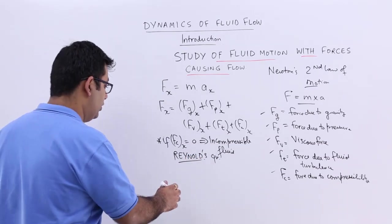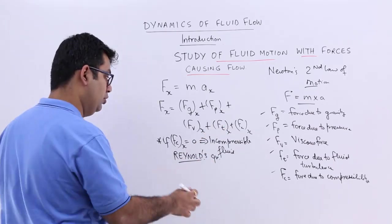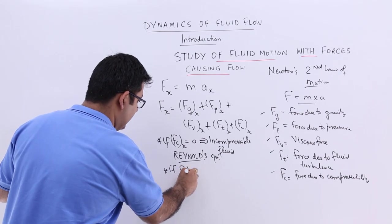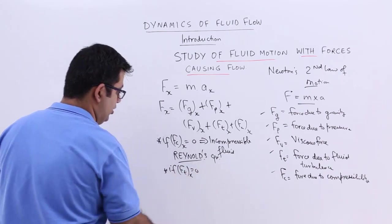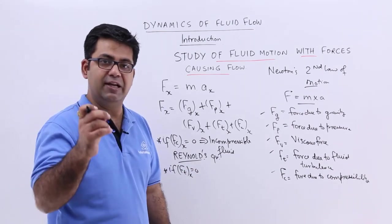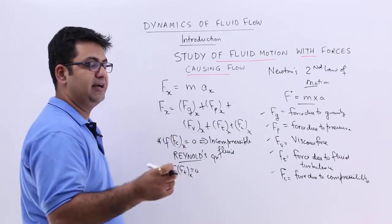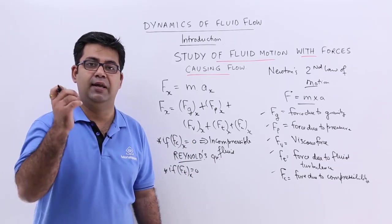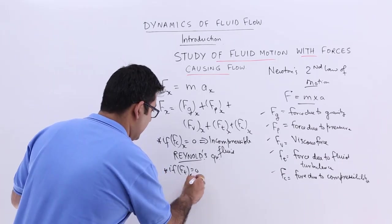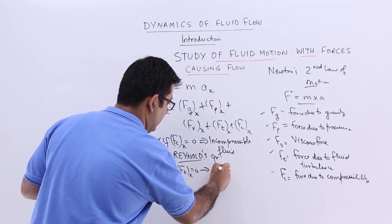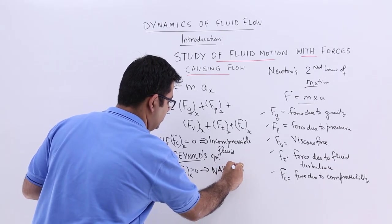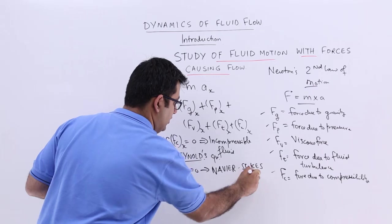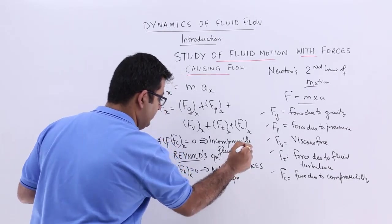Now if I put the turbulence force also equal to zero — so if the turbulence force also becomes negligibly small, this means that the flow is not turbulent, it is laminar — then the equation is called the Navier-Stokes equation.